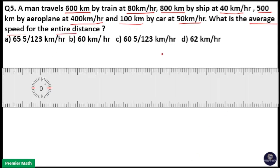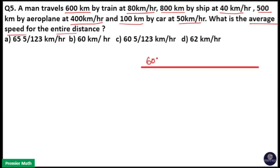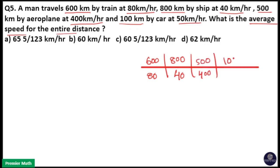A man travels 600 km at 80 km per hour, 800 km at 40 km per hour, 500 km at 400 km per hour, and 100 km at 50 km per hour. This is distance and this is speed. This is a direct question: average speed is equal to total distance divided by total time.